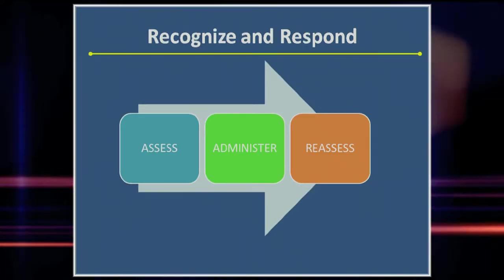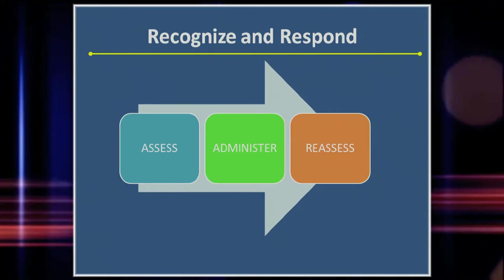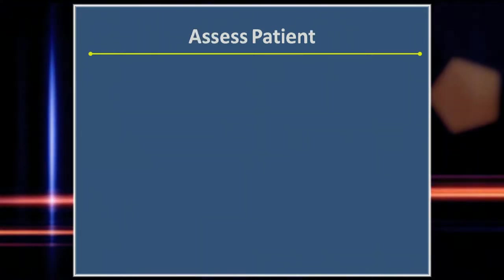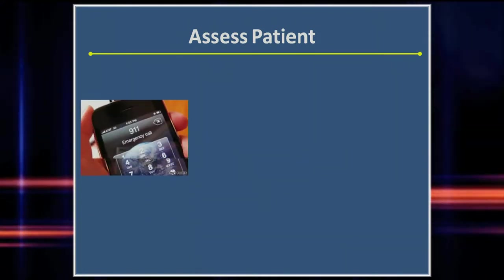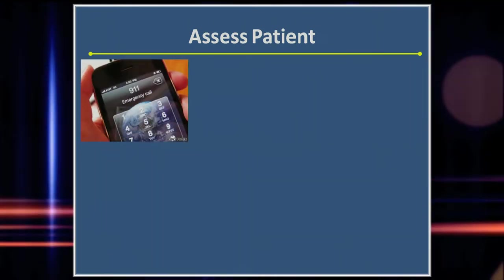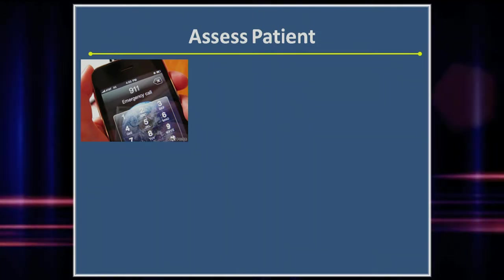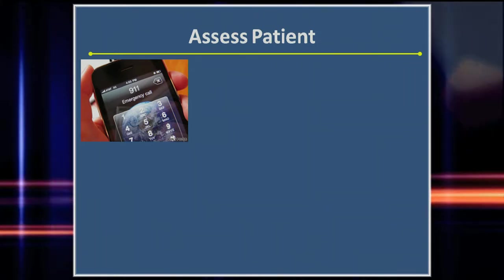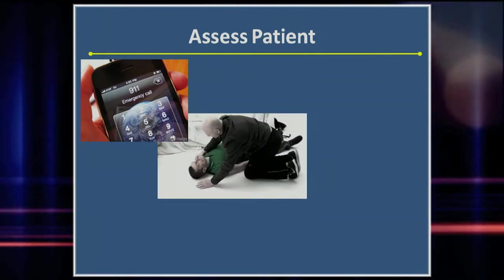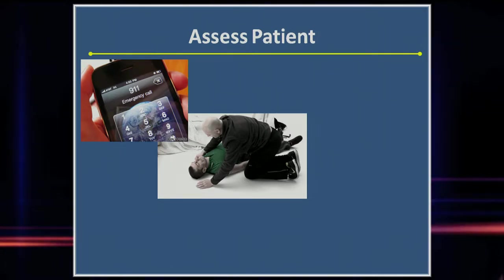To successfully deploy naloxone, one must assess the patient, administer the drug, and reassess the patient. If you suspect someone has overdosed, the first thing you should do is call 911, or tell someone with you to call them. If you're using a cell phone, you can put it on speaker and listen to the instructions while you assess the patient. First, assess for unresponsiveness by calling out, shaking their shoulders, and attempting to arouse them.